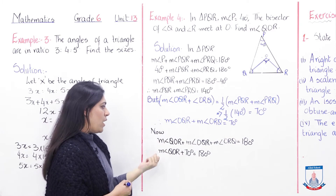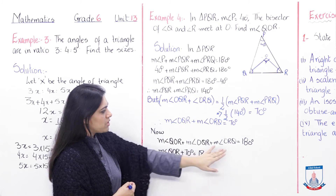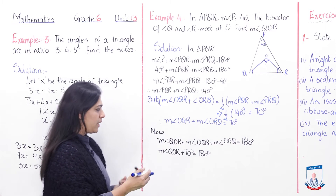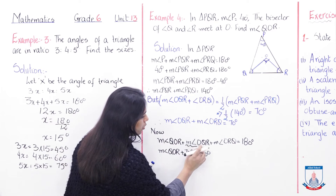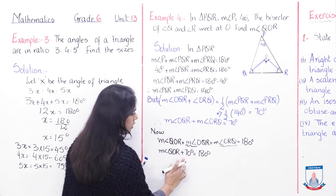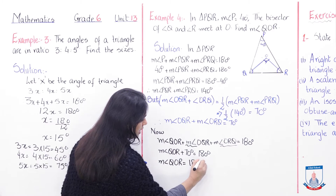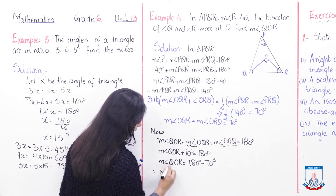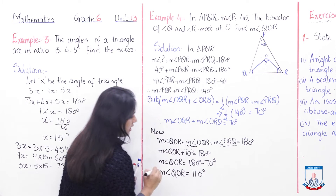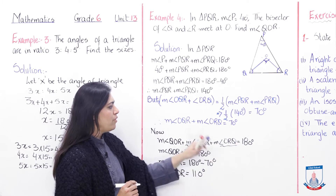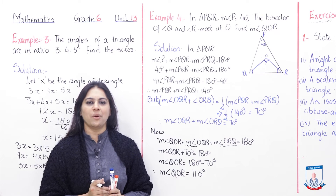Now in triangle OQR: measure angle QOR + measure angle OQR + measure angle ORQ = 180 degrees. We already have measure angle OQR and measure angle ORQ, both equal to 70 degrees combined. So measure angle QOR = 180 − 70 = 110 degrees. This is how you find the angle by working from the bigger triangle into the smaller triangle.